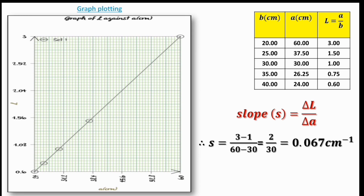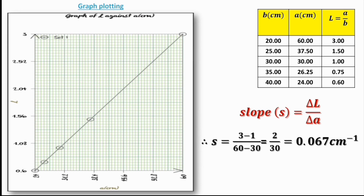Taking two values from the graph: on the vertical axis, 3 minus 1; on the horizontal axis, the corresponding values are 60 minus 30. So the slope equals 2 over 30, which is 0.067 per centimeter. The unit is per centimeter because l has no unit but a is in centimeters and appears in the denominator, giving an inverse centimeter unit.